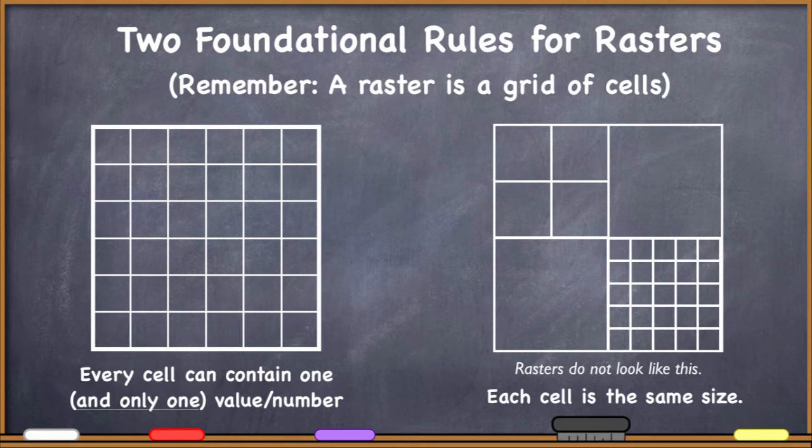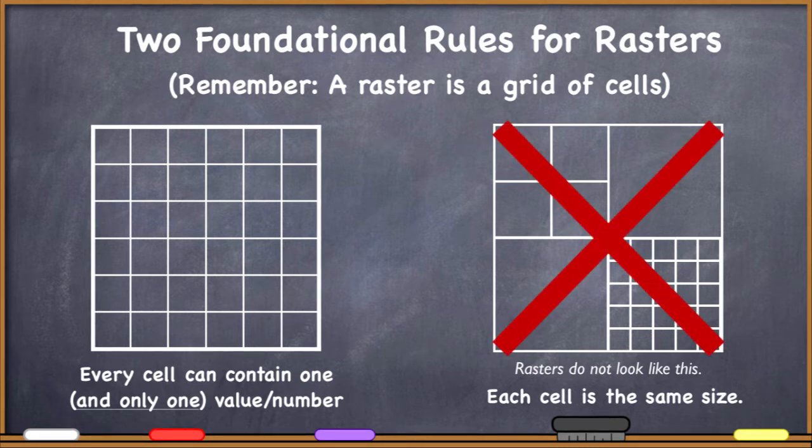Also, each cell in a raster has to be exactly the same size. So rasters do not look like what I have over here on the right. Every cell in a raster must be the exact same size. Now, of course, you can have different rasters with different size cells, different size cells across different rasters. But every time you have one single raster, they are all going to be the same size cells. So we take this grid, we make every cell the exact same size, and we put only one number in it. Basically, we are off to the races as far as the raster data model goes because we have our core foundation then.